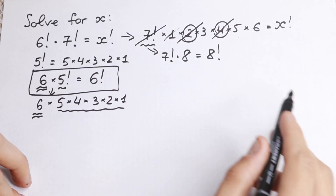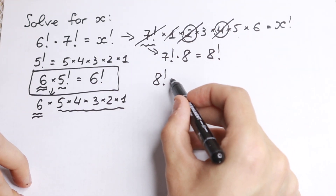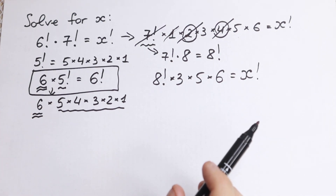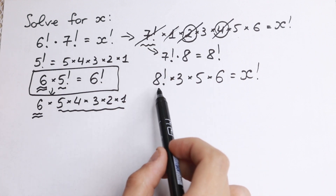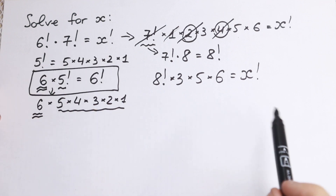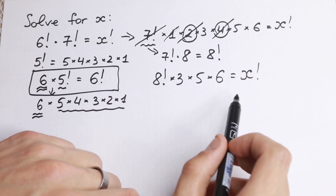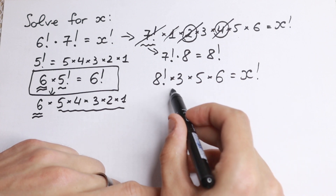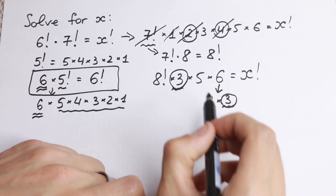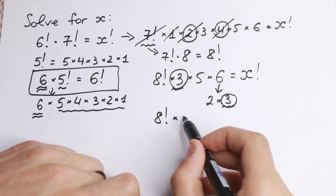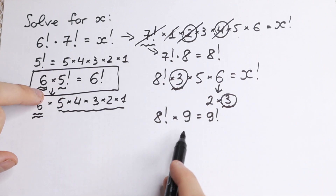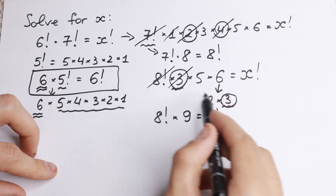We can also cancel the 1 since multiplying by 1 changes nothing. So now we have 8 factorial times 3 times 5 times 6 equal to x factorial. Next, let's use the same rule again: 8 factorial times 9 equals 9 factorial. We can find 9 by taking the remaining 3, and writing 6 as 2 times 3, giving us a second 3. So 3 times 3 equals 9, and 8 factorial times 9 equals 9 factorial. We replace 8 factorial, 3, and 3 with 9 factorial.